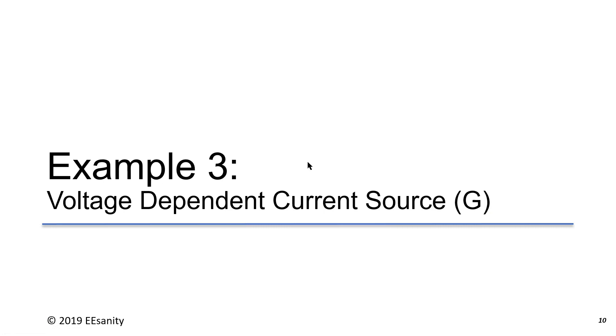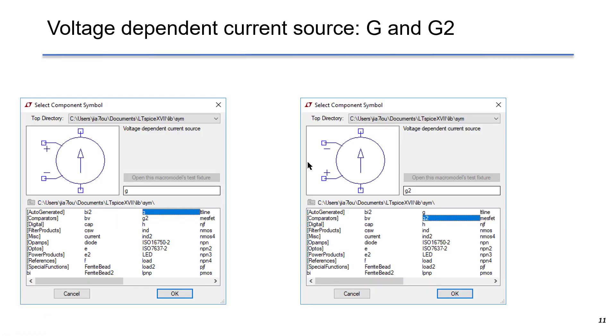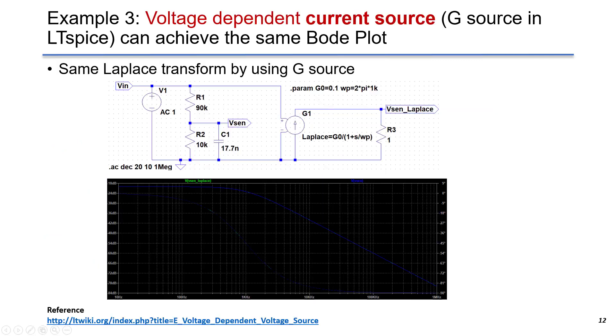This is the third example to use voltage-dependent current source. This is a similar idea as voltage-dependent voltage source, but this time we change to current source. The input terminals are the same. We have control terminals and output is current source instead of voltage source. The difference between G and G2 is the input polarity.